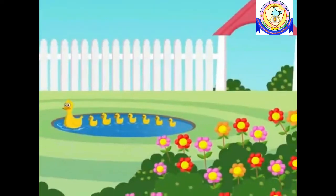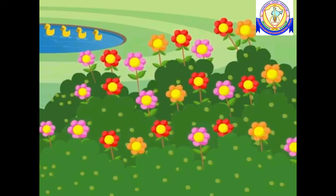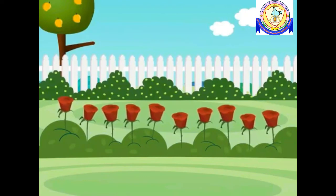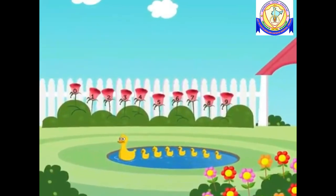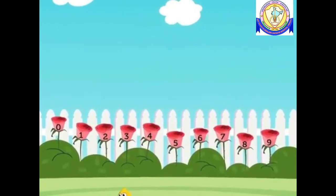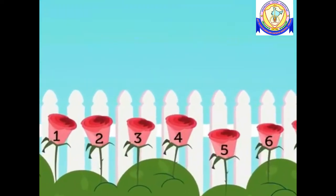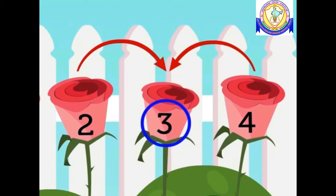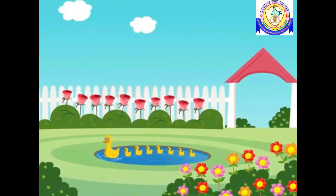Look at this garden — there are so many beautiful flowers! Now we are going to learn numbers between with the help of these flowers. Can you see the pink roses? Every pink rose has a number. You can see numbers two and four on the pink roses. Which number is in between them? Three! Thus number three comes between two and four.